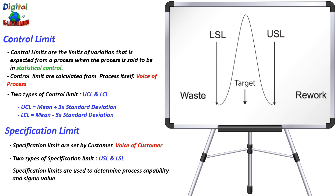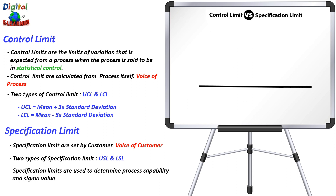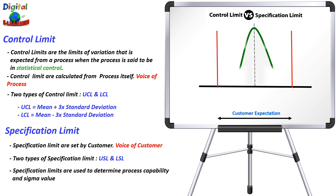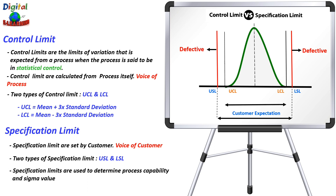Let us understand all these concepts with the help of some graphs. We will first create the specification limits, which represent the customer expectation or voice of the customer. Then we create the process, which is a normal distribution. We set our lower specification limit and upper specification limit — anything beyond these red lines is a defective part. Then we define our upper control limit and lower control limit, which we call the voice of process or process variation.